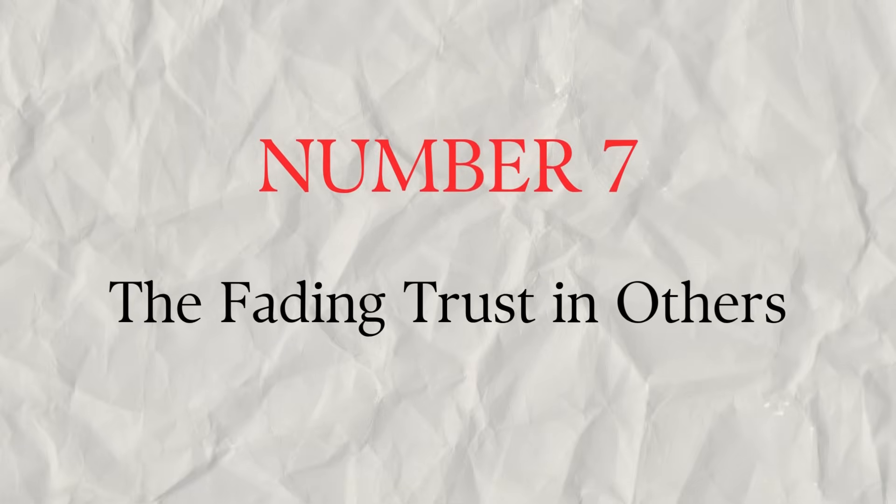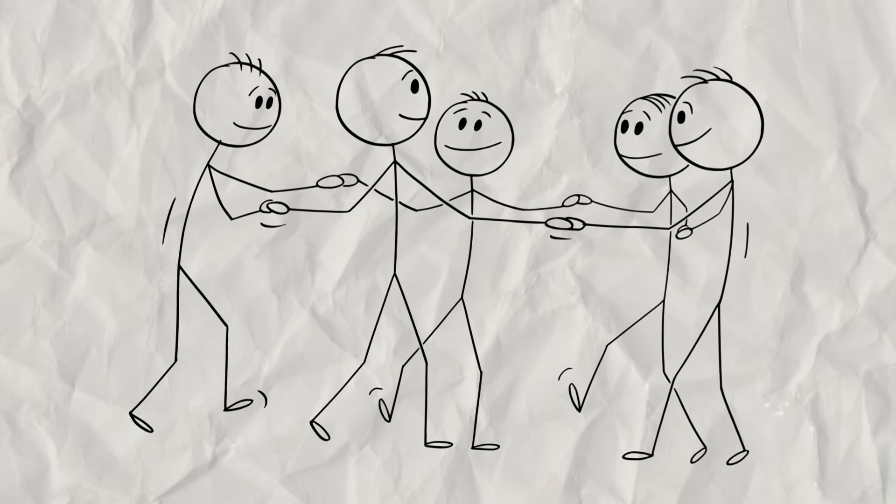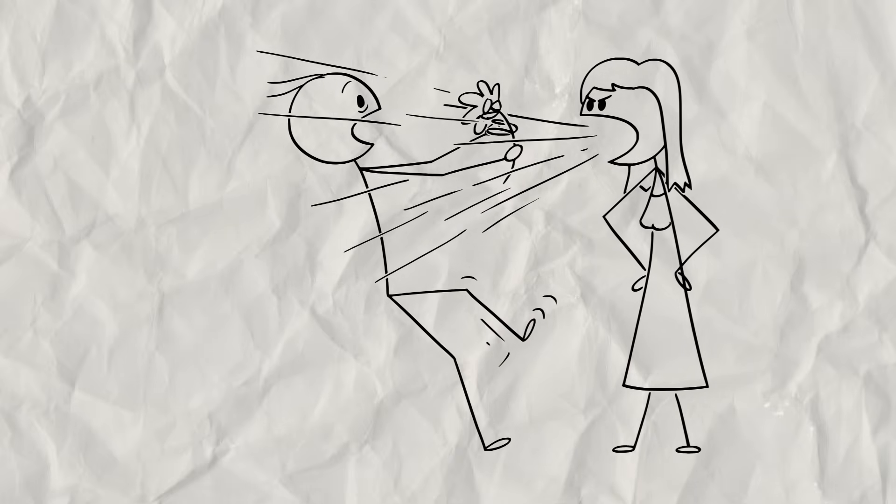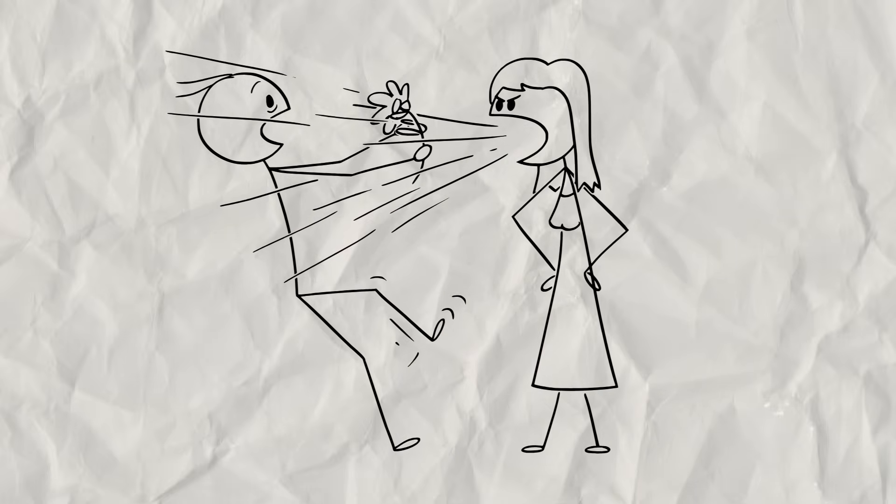Number 7. The Fading Trust in Others. Humans are social creatures. Our brains are wired for connection. But what happens when the source of our deepest wound is another human being?